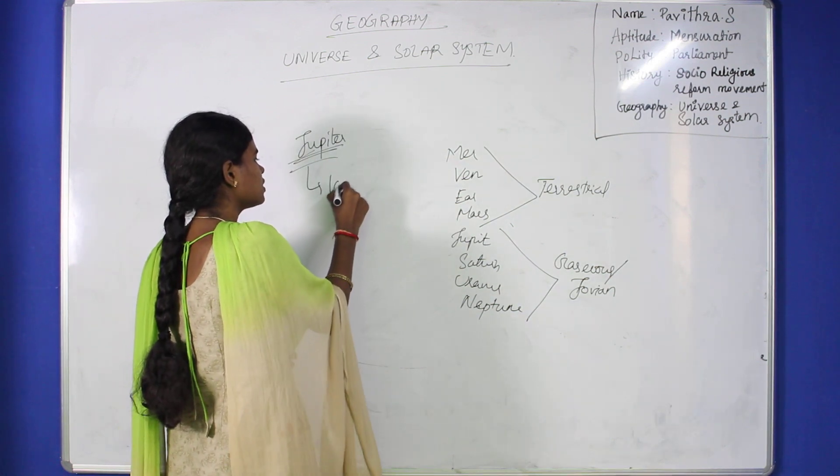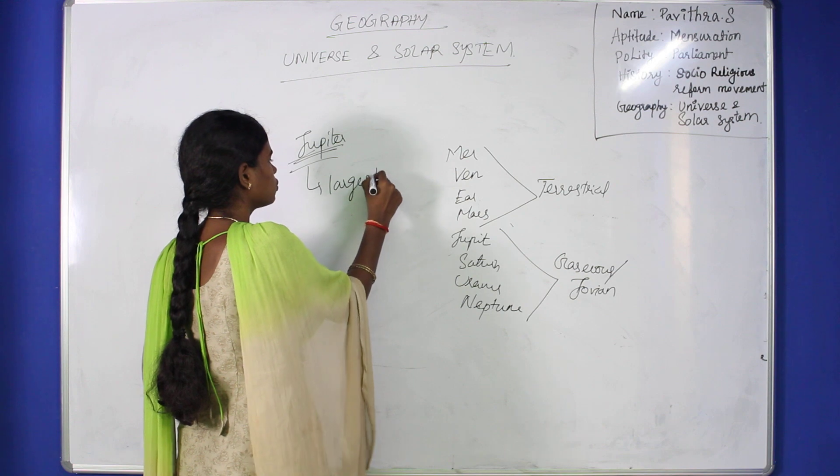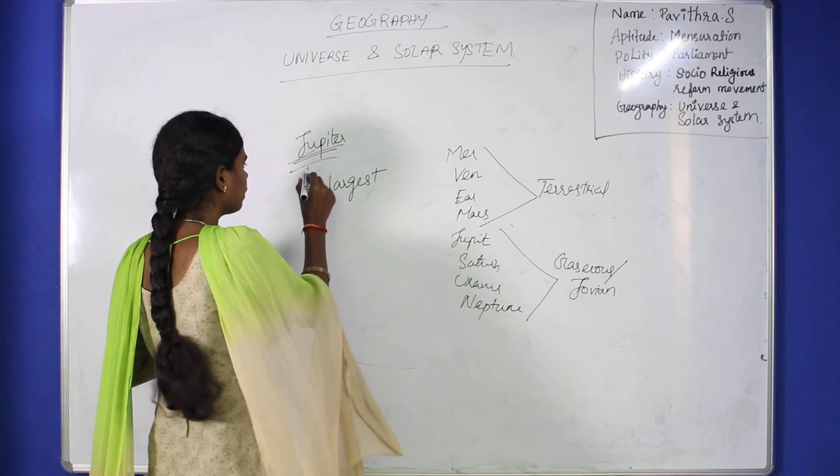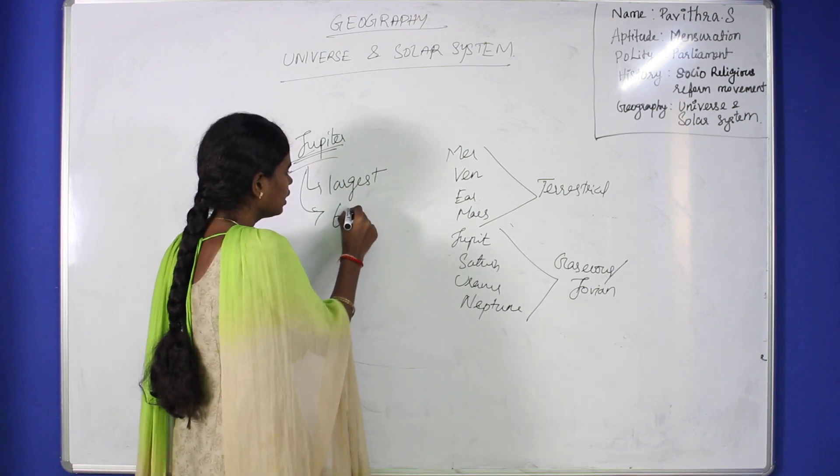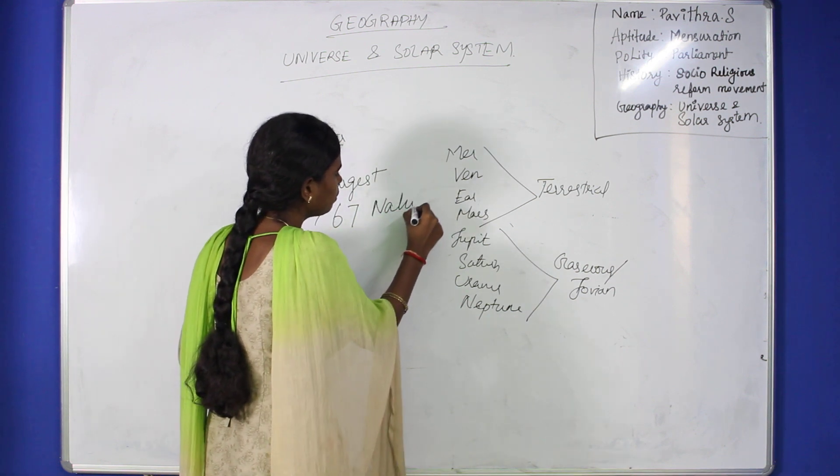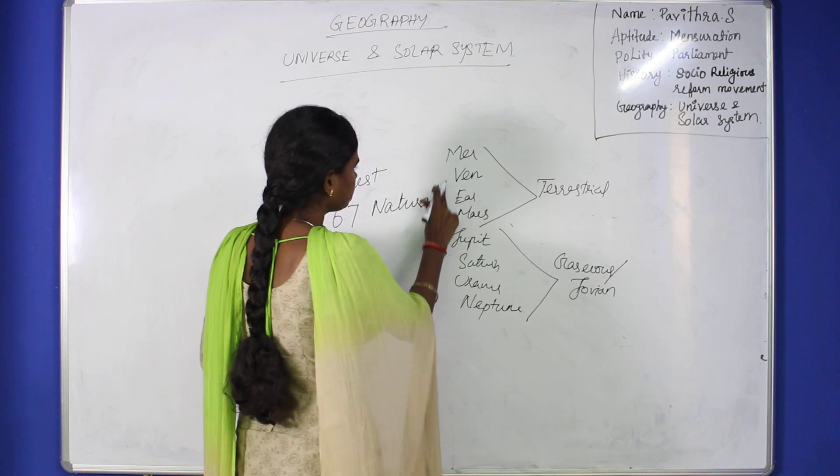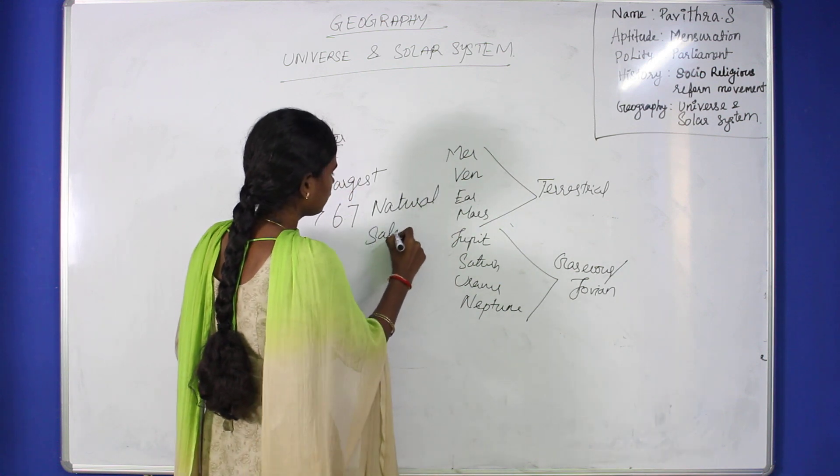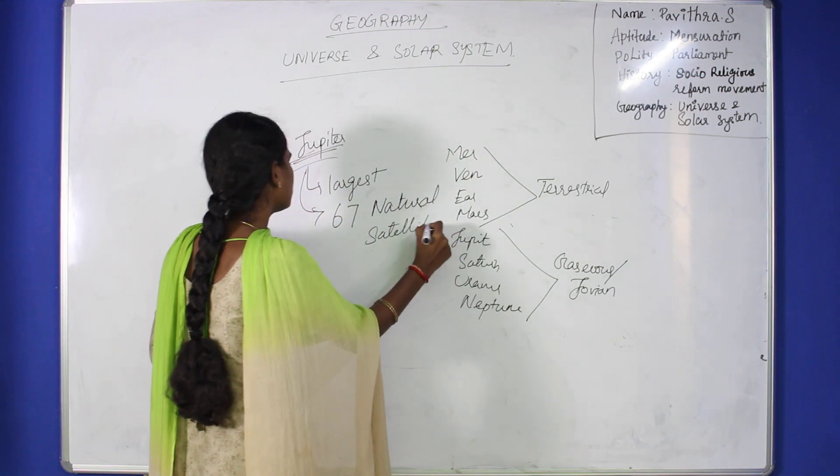Jupiter is the largest planet in the solar system. Jupiter has the most satellites, with 67 natural satellites.